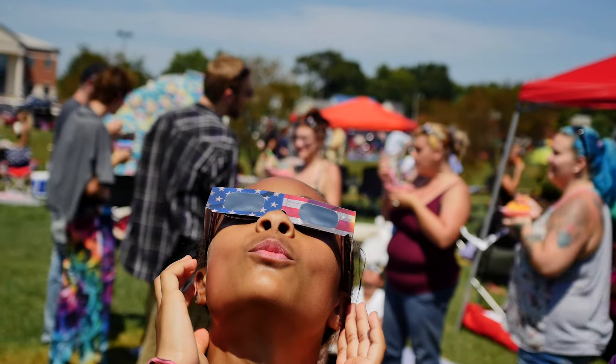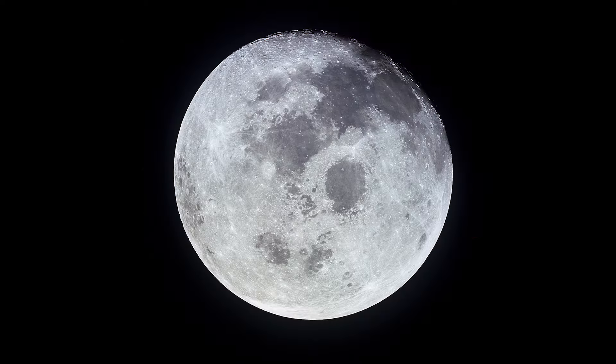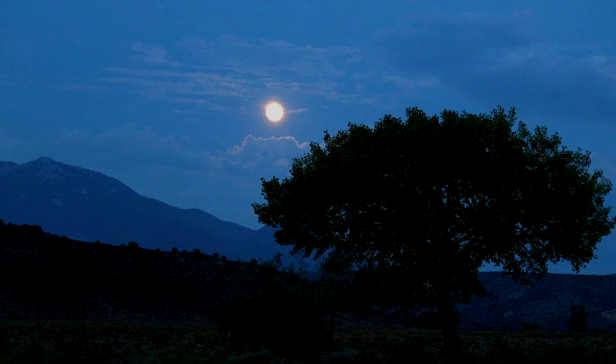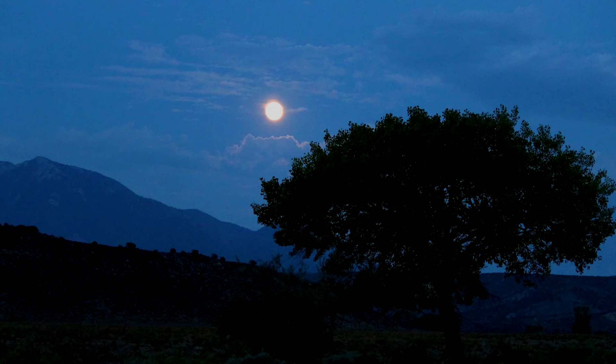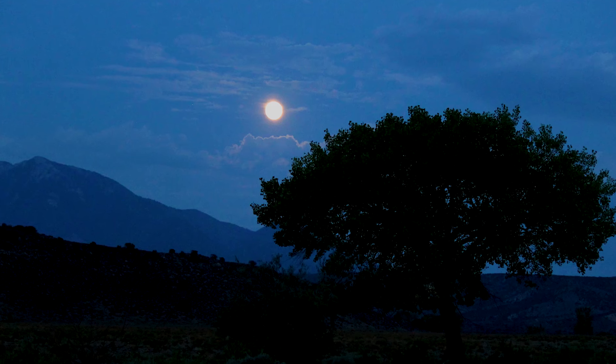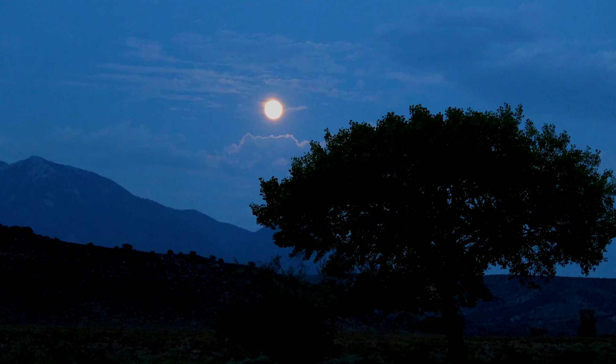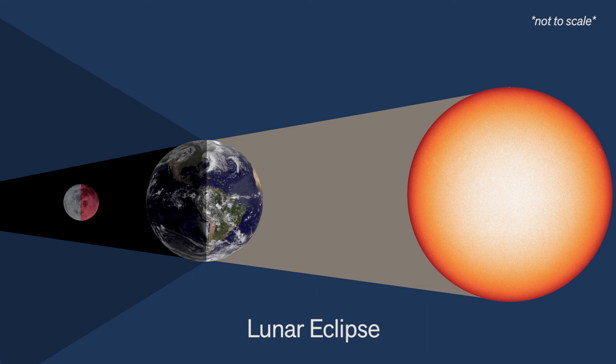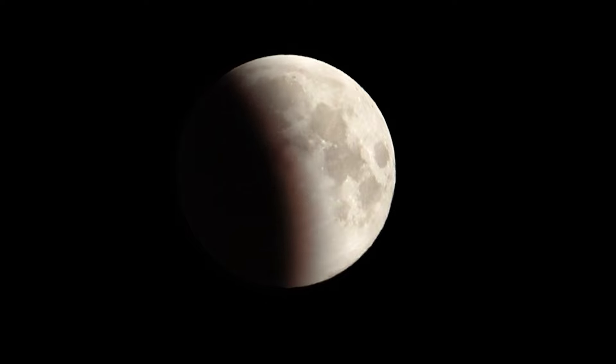Solar eclipses only happen during the day because you have to be on the side of the Earth that's facing the Sun. If you've seen an eclipse at night, you've experienced a lunar eclipse. We can see the Moon because it reflects sunlight. At night, you're on the part of the Earth that's facing away from the Sun, and the Moon becomes visible against the night sky. Lunar eclipses occur when the Earth lines up between the Sun and the Moon and blocks the sunlight from hitting the Moon.